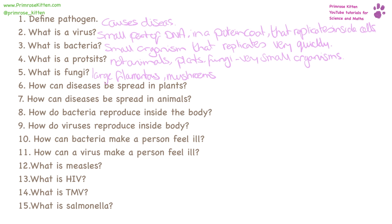How can diseases be spread in plants? This is going to be through the help of tiny little animals — insects — which move from plant to plant. How can diseases be spread in animals? This can be through waste, through urine or faeces, through skin contact, or transfer via other bodily fluids like water or saliva.